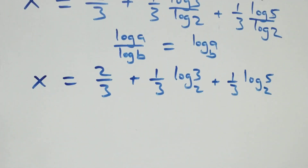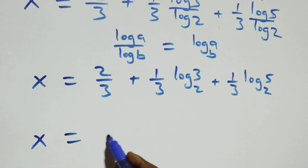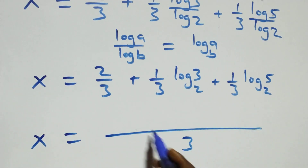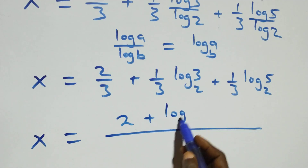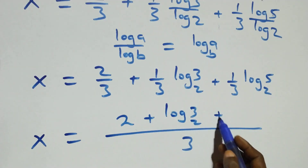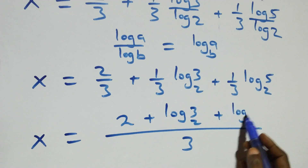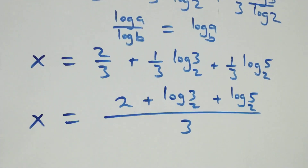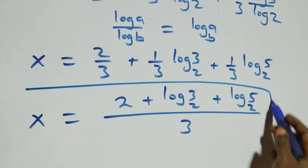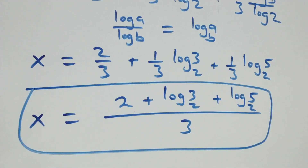We bring these together as a single fraction with denominator 3. So x equals (2 + log₂3 + log₂5) over 3. The value of x is (2 + log₂3 + log₂5) divided by 3.